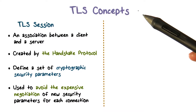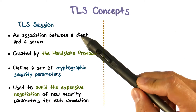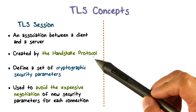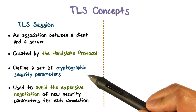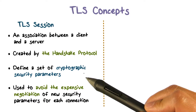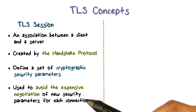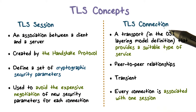Two important TLS concepts are the TLS session and the TLS connection. A TLS session is an association between a client and a server that is created by the Handshake protocol. It defines a set of cryptographic parameters that are used by a set of connections within the session, so that we can avoid repeated expensive negotiation of new security parameters for each new connection.